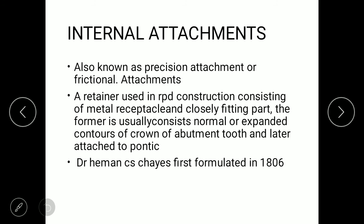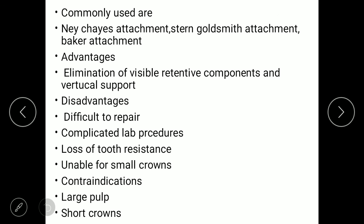Dr. Hermann C.S. Chase first formulated the internal attachment in 1806. Commonly used attachments include the Neurocase attachment, Stern Goldsmith attachment, and Baker attachment. Advantages of internal attachment include elimination of visible retentive components and visible vertical support.